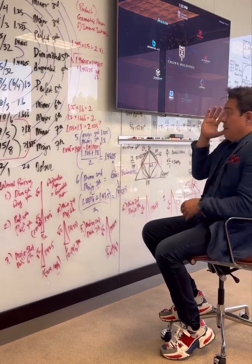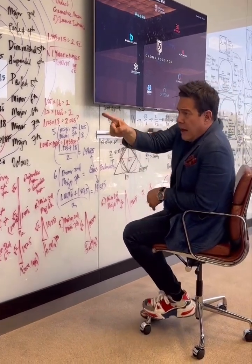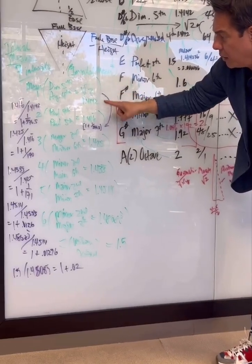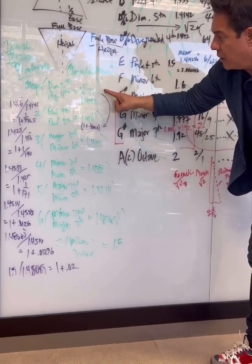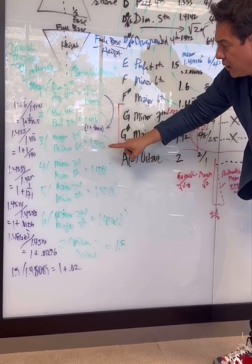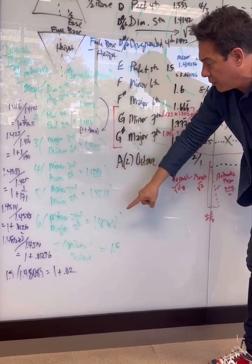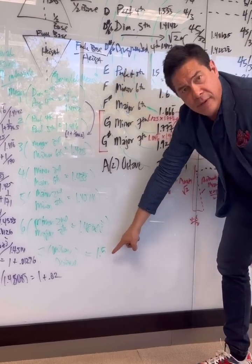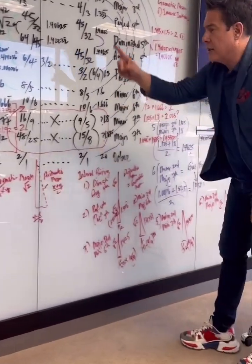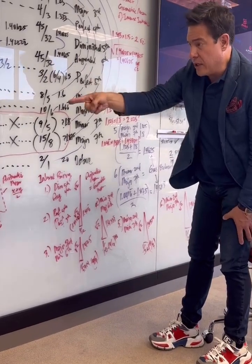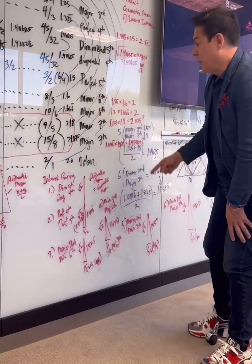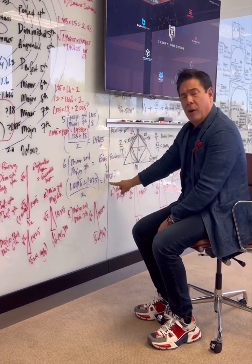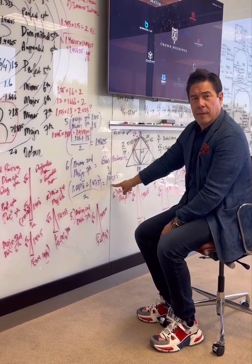But something doesn't work here. In every one of these cases, the arithmetic mean values started smaller and went to larger: 1.4142, 1.416 repeating, 1.425, 1.4333, 1.4514, 1.48, and then 1.5. But with Pythagorean tuning, when we get to the fifth progression it goes to 1.46, and then the next one is smaller. That doesn't seem right.